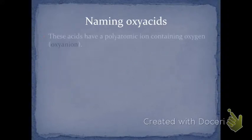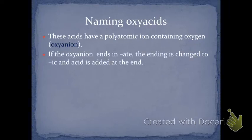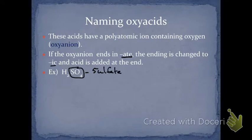Oxyacids are a little different. They have a polyatomic ion containing oxygen and then they also always have hydrogen. So there's two different rules when it comes to oxyacids. The first is if the anion, the polyatomic ion, ends in ate, you change it to ic and then acid. So you actually remove the hydro.